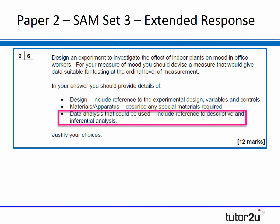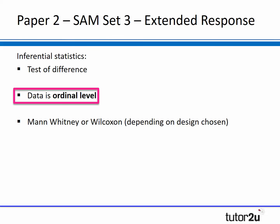On top of that, there is a question in the third set of sample assessment materials that's a 12-mark question where students are required to design their own investigation. As part of this question, students are required to analyse the data, including references to the descriptive and inferential statistical tests that they would choose. In order for students to fulfil that particular bullet point, they're going to need to understand that the data they will be gathering will be ordinal, and therefore the test might be a Mann-Whitney test or a Wilcoxon test, depending upon the particular test they've chosen.